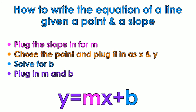How to write the equation of a line given a point and a slope. First, plug the slope in for M. Choose the point and plug it in as X and Y. Solve for B. Plug in M and B.